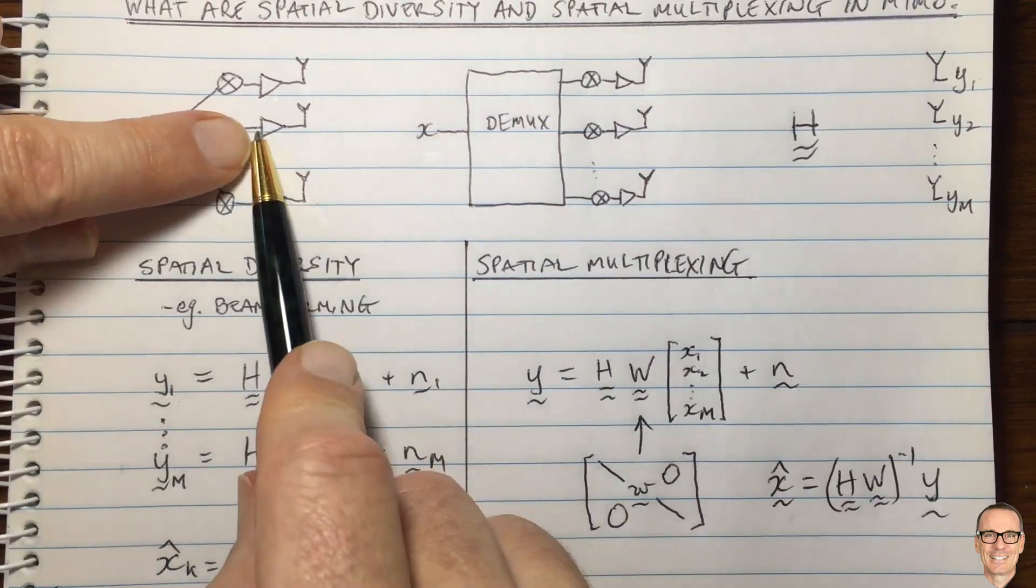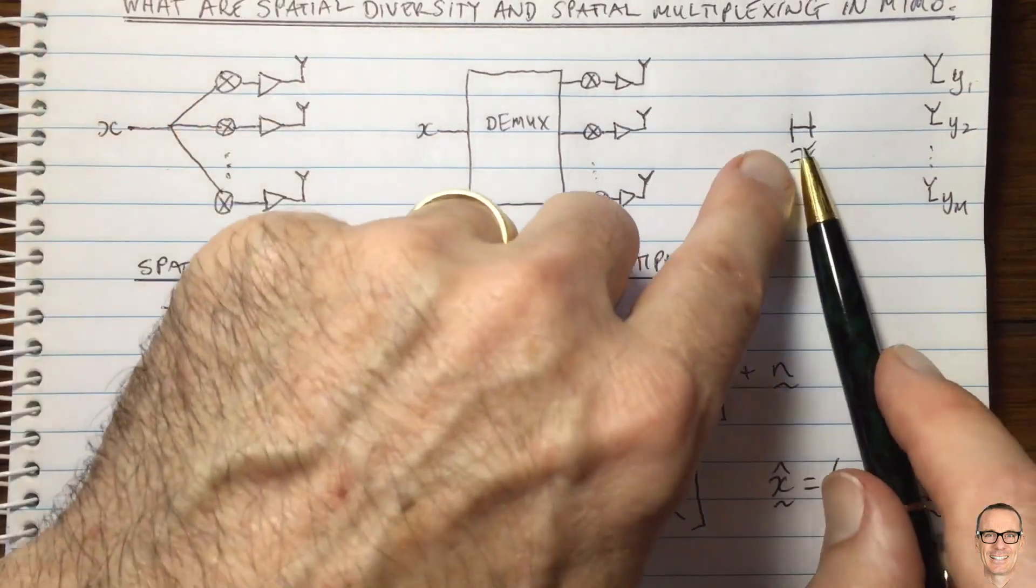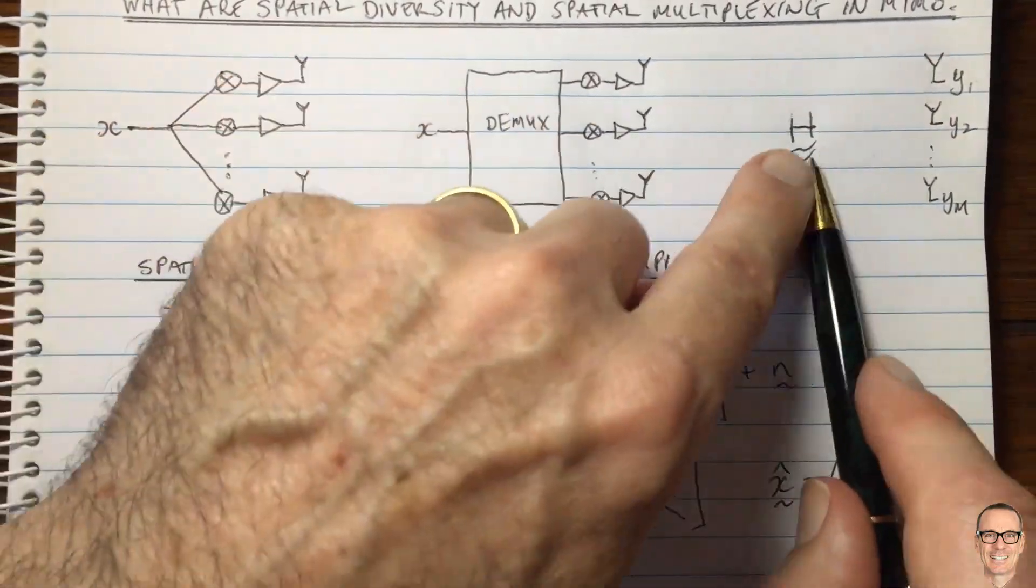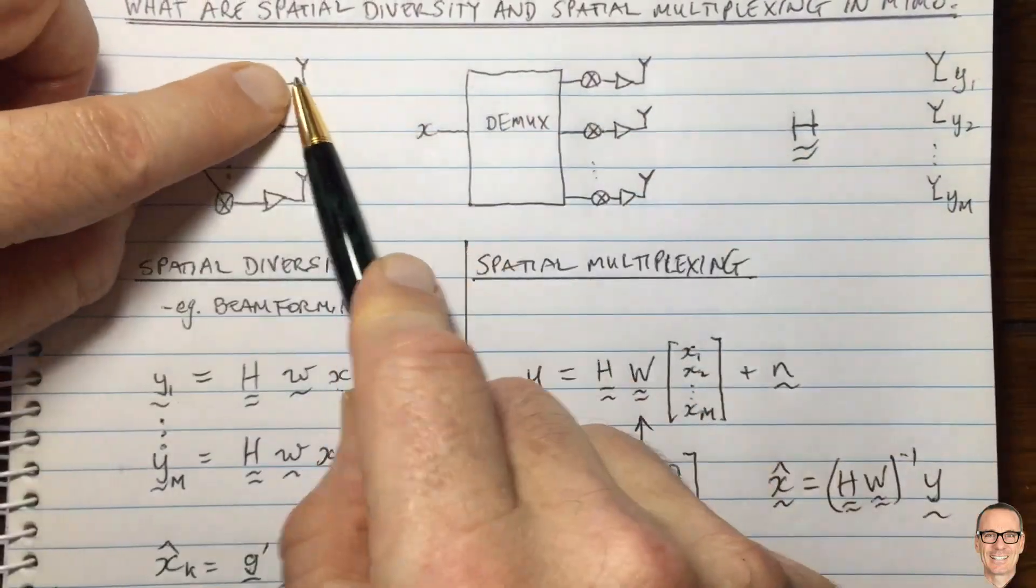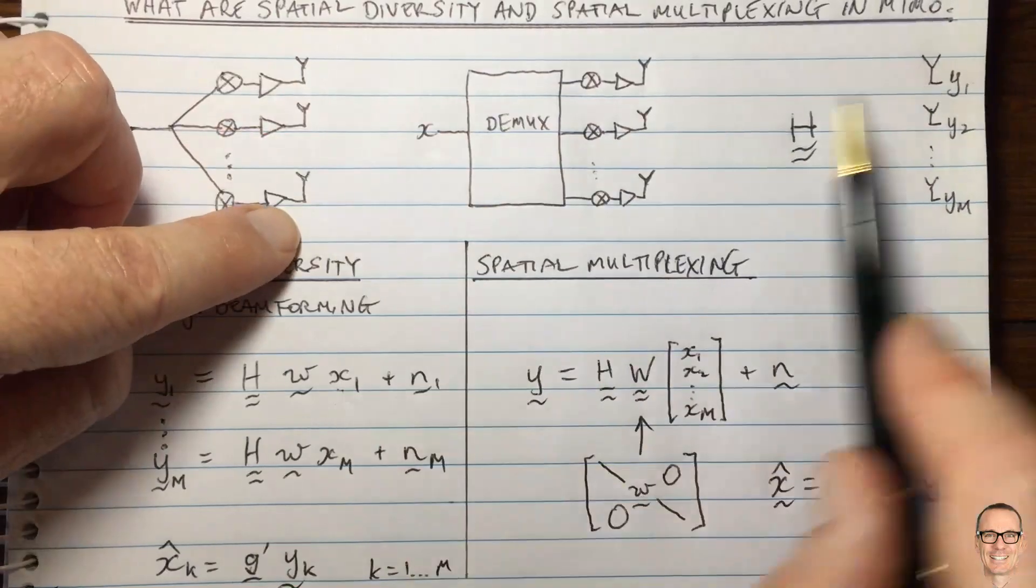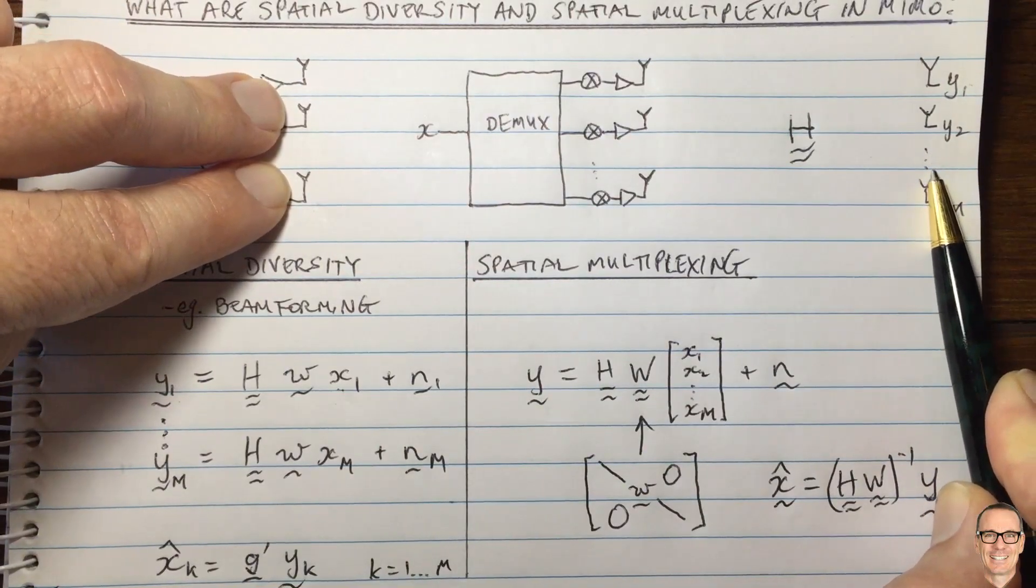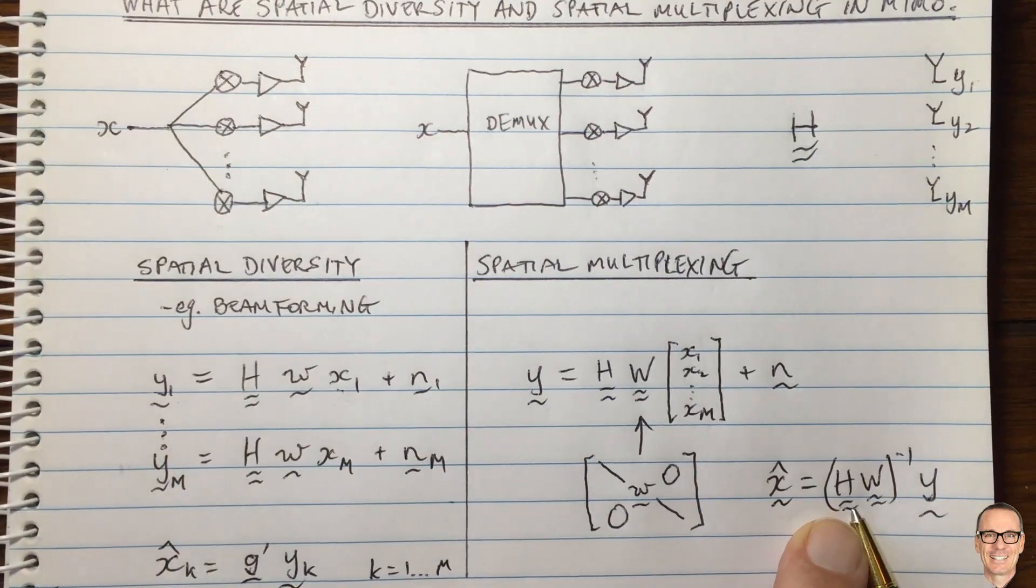And if you had simply a direct line of sight, then H, if there's only one line of sight, then all of the elements of H would be the same, because the path differences between all of these elements would be essentially the same or very close to each other. In that case, you would not be able to invert the channel matrix H.